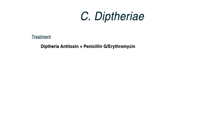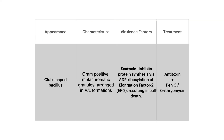For treatment, give antitoxin plus either penicillin G or erythromycin — the antitoxin is the most important component. To summarize: Corynebacterium diphtheriae is a gram-positive club-shaped bacillus with metachromatic granules arranged in palisades (V- or L-shaped). The major virulence factor is a beta-prophage exotoxin causing ADP ribosylation of elongation factor 2. Key clinical feature is pseudomembranous pharyngitis with a grayish pseudomembrane, plus or minus systemic symptoms. Cutaneous diphtheria is less high-yield.